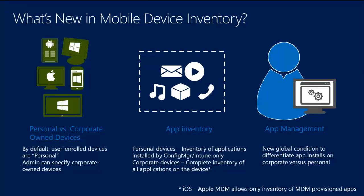So we talked earlier about device inventory. We have this attribute called device ownership - we can set it to personal or corporate, and it inventories differently. If set to personal, it only inventories applications we deployed to the device. If set to corporate, it does a full inventory of all applications on the device. Note that Apple only supports inventory of MDM-provisioned applications, so regardless of corporate or personal setting on iOS, it only inventories those provisioned by the service. We also have a new global condition that allows you to deploy different deployment types based on this attribute.